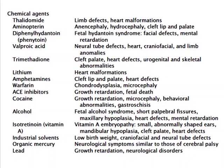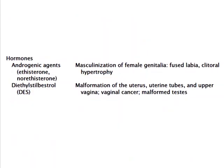Isotretinoin (vitamin A analog) may lead to small abnormally shaped ears, mandibular hypoplasia, cleft palate, and heart defect. Industrial solvents may lead to craniofacial and neural tube defects. Organic mercury may lead to neurological symptoms similar to cerebral palsy. Lead may lead to growth retardation and neurological disorders. Androgenic hormones may lead to masculinization of female genitalia with fused labia and clitoral hypertrophy. DES (diethylstilbestrol) may lead to malformation of the uterus, uterine tube and upper vagina, vaginal cancer, and malformed testes. Finally, maternal diabetes may lead to a variety of malformations; the most common are heart and neural tube defects, and also increased fetal weight.